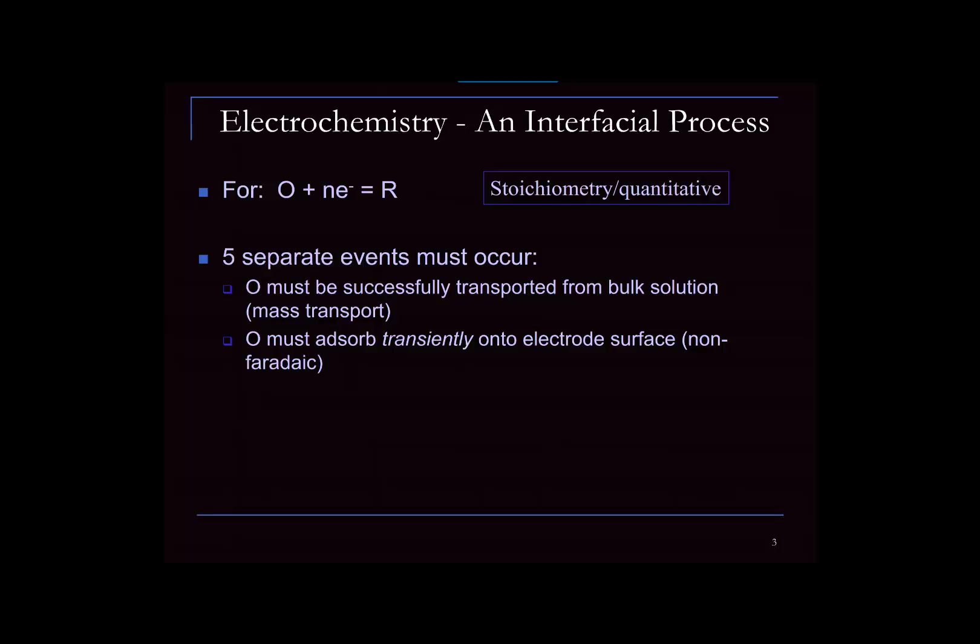Once the material gets to the electrode, it has to get close enough that an electron can get from the electrode to the material in solution. Generally we're talking about outer sphere electron transfer — you'll learn more about this in Professor Kearse's course — but that means the two must be within about a nanometer. So it's best if your analyte O adsorbs transiently. The transient part is really important: you don't want it to permanently stick and bind to the electrode surface, because it will only prevent another O from coming and undergoing reduction.